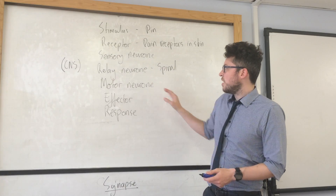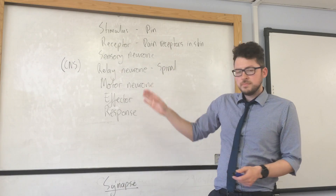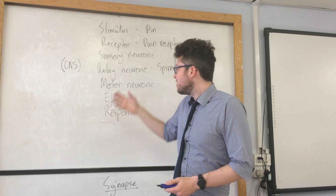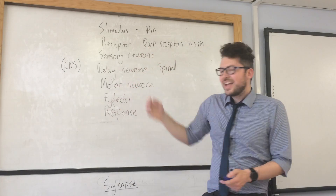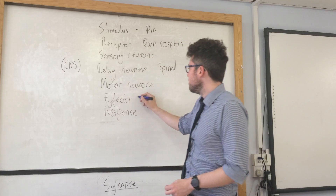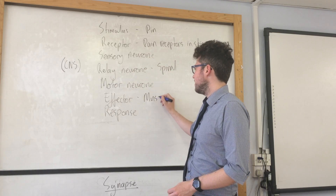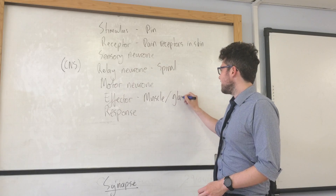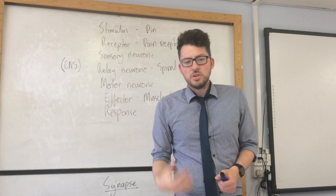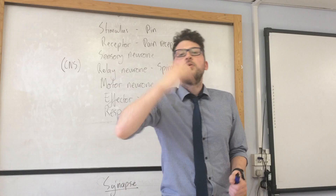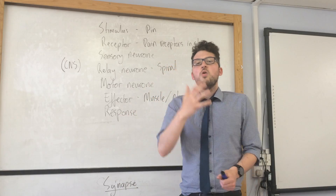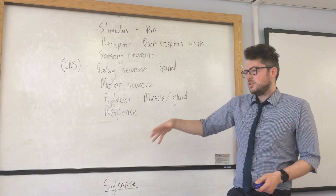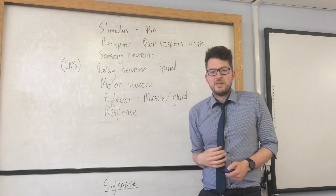It would then be communicated by the motor neuron, which is another neuron, and obviously it would be an electrical impulse in the neurons. Then it goes to an effector, which would be a muscle or a gland. In this example it will be a muscle, and the muscle will then cause me to pull my arm away — the response would be to move away from the stimulus.